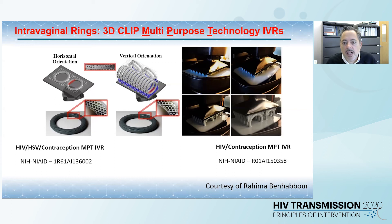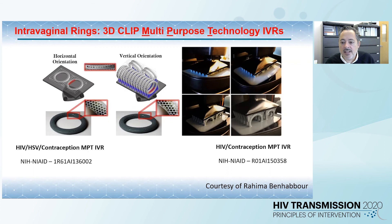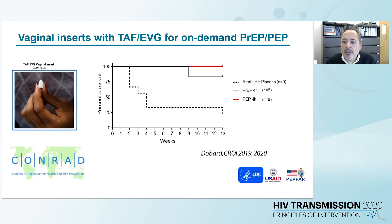Another promising technology is intravaginal rings, in this case 3D-printed rings developed by Rahima Benhabbour also at UNC. These rings are designed for multipurpose prevention against HIV, HSV, and for contraception — combining Tenofovir, LNG, and other agents. A very promising strategy where you can incorporate not only anti-HIV drugs but also anti-HSV agents and contraceptives. Another modality currently under evaluation in non-human primates is vaginal inserts containing TAF for on-demand PrEP and PEP. This work is done in collaboration with CONRAD to develop the product. We've been investigating the efficacy of these inserts as either PrEP or PEP, and the results are very encouraging, with high levels of protection against vaginal transmission.